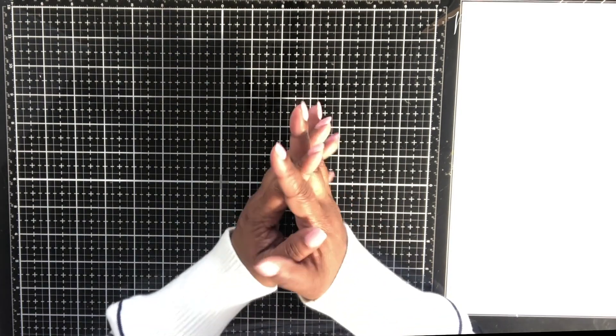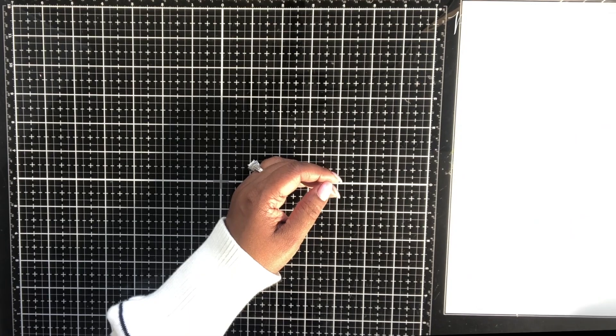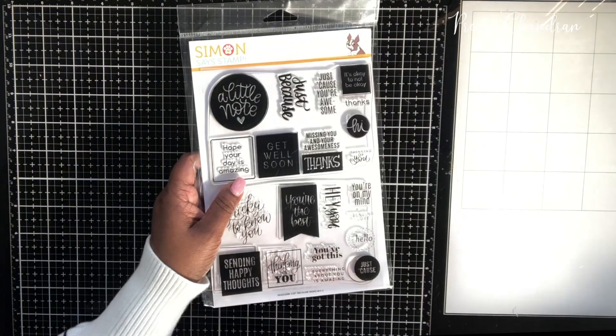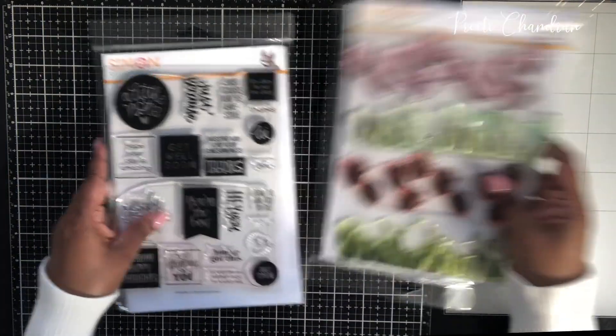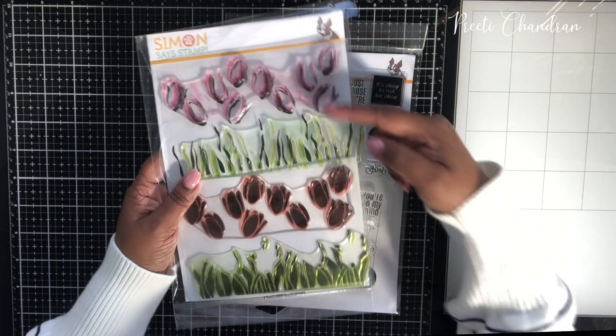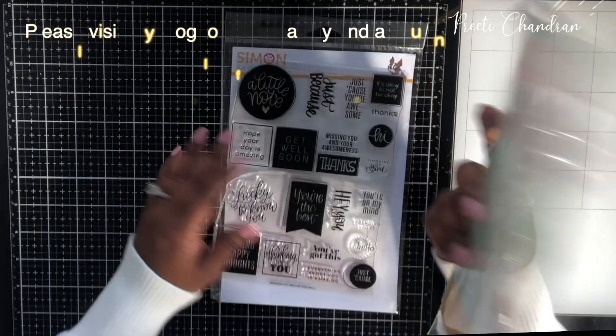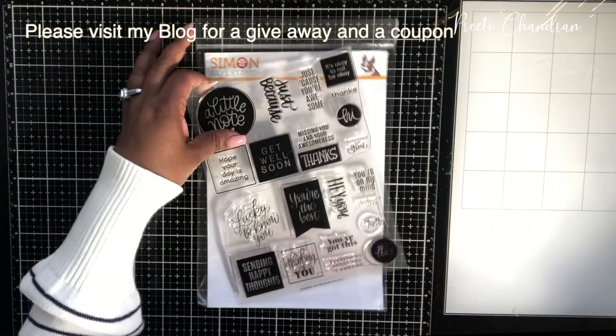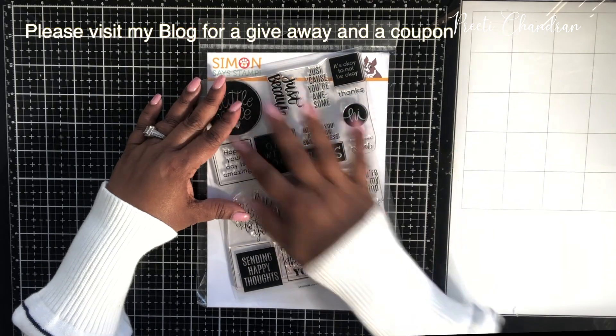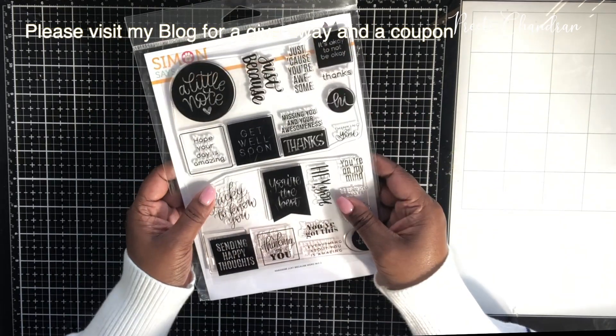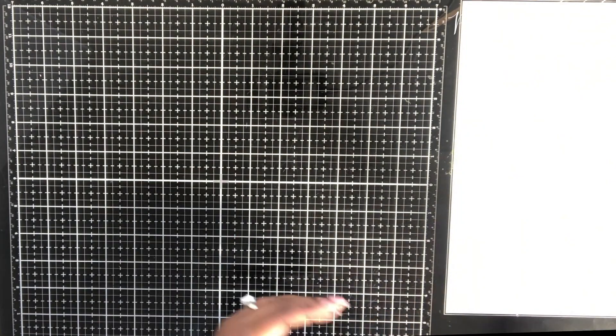Hello everybody, this is Preeti from It's a Pretty World. Welcome to my channel. Today I'm using a couple of stamp sets from the new release from Simon Says Stamp called Lucky to Know You. This is the March 2020 release and it's a beautiful release. I'm making this card for the blog hop, the second day blog hop for this release.